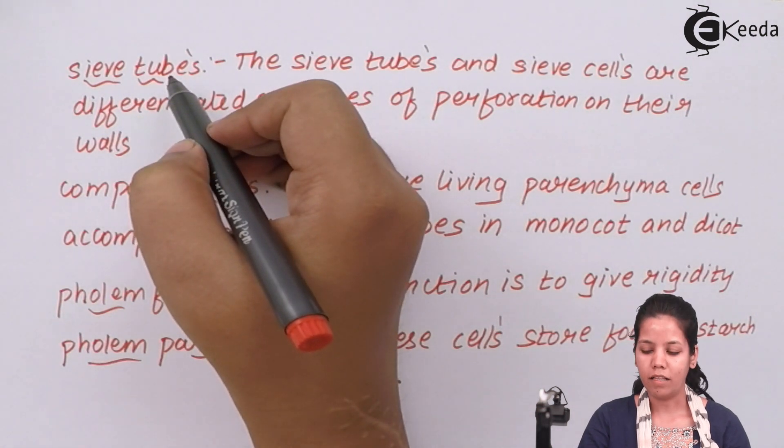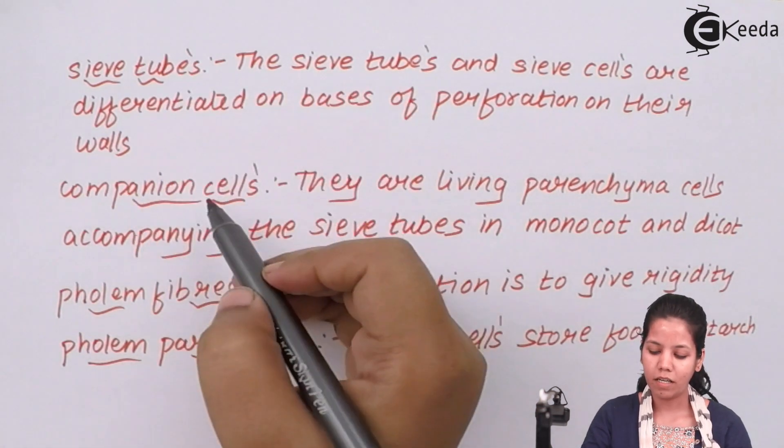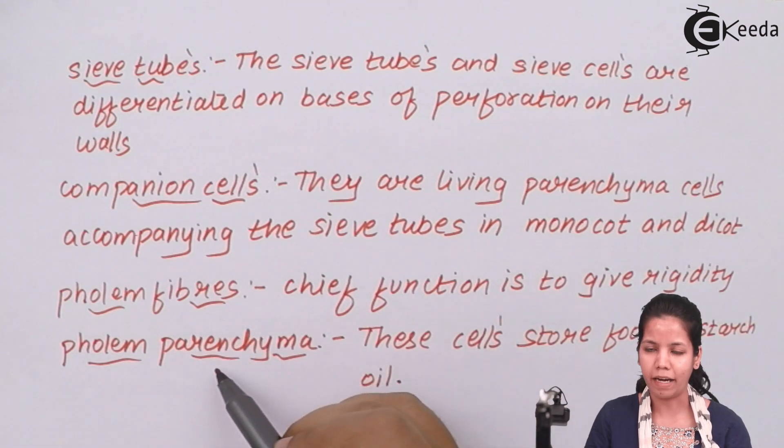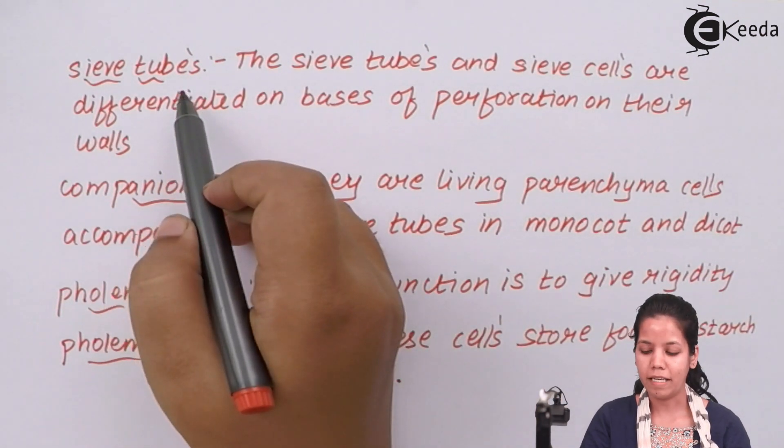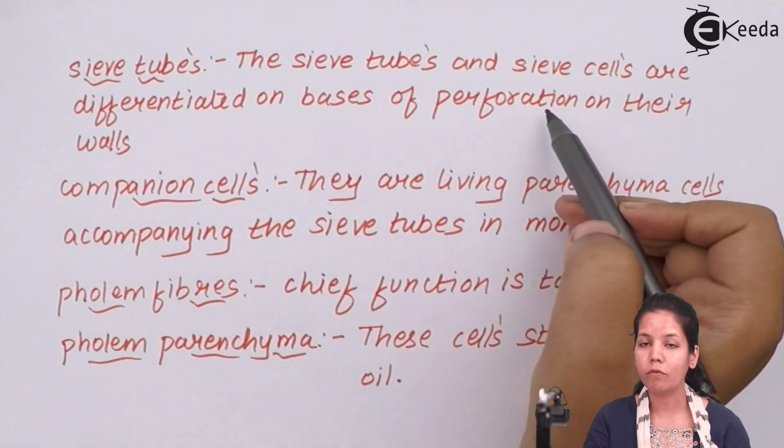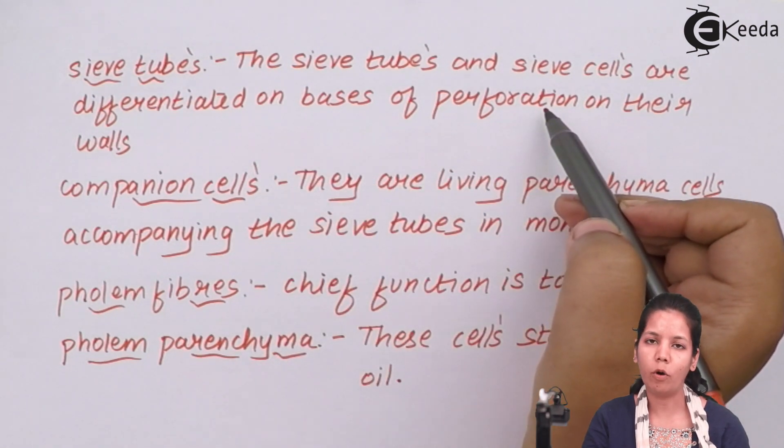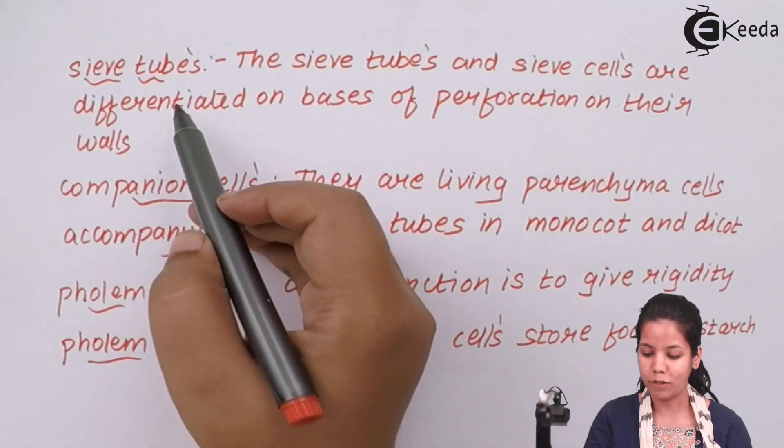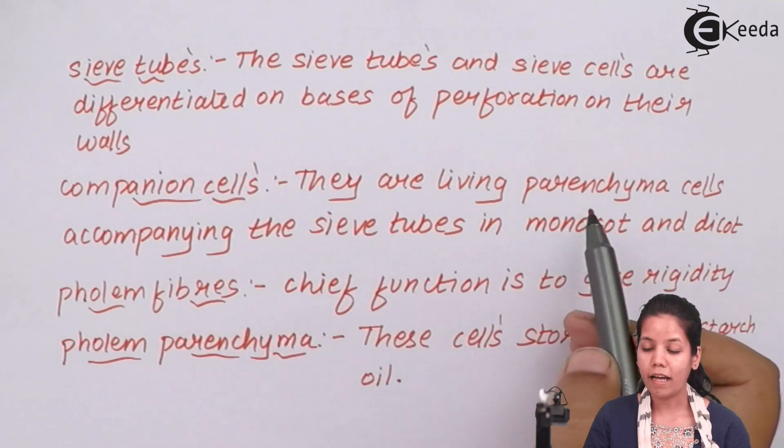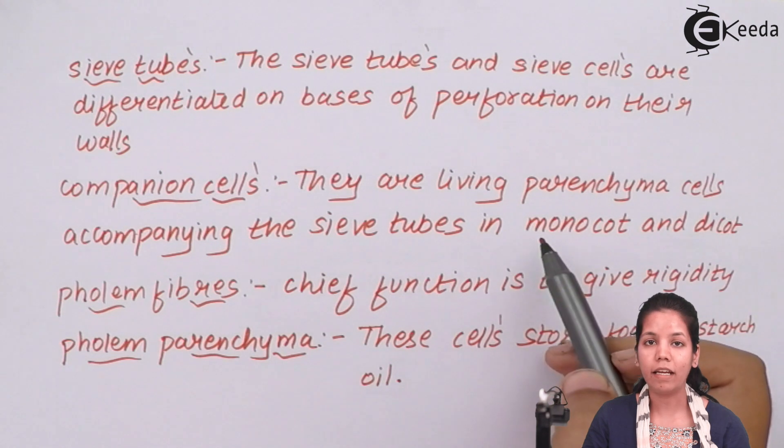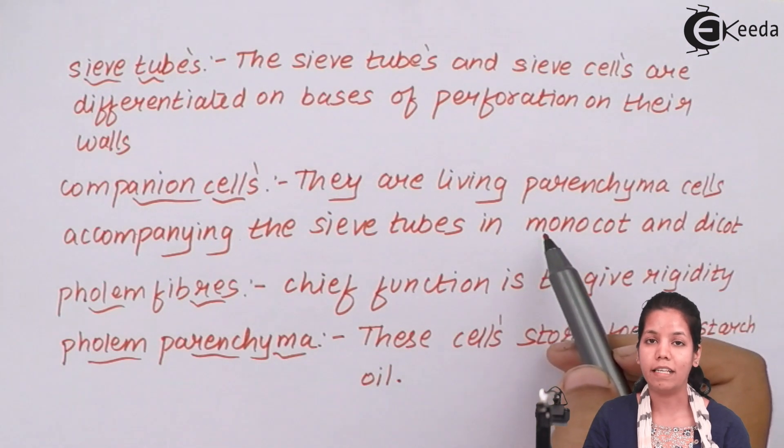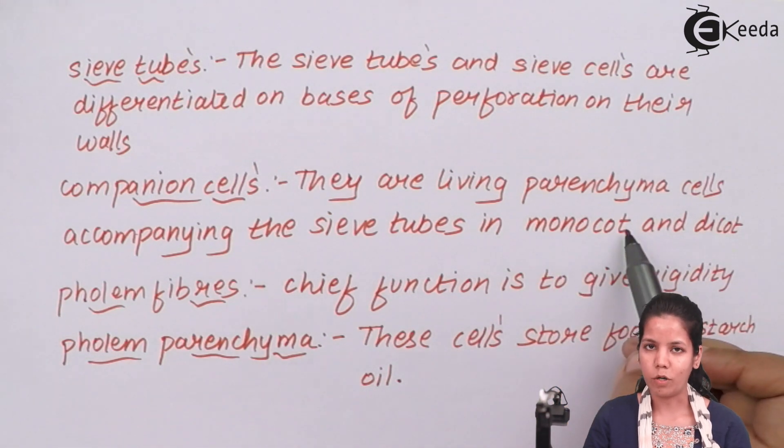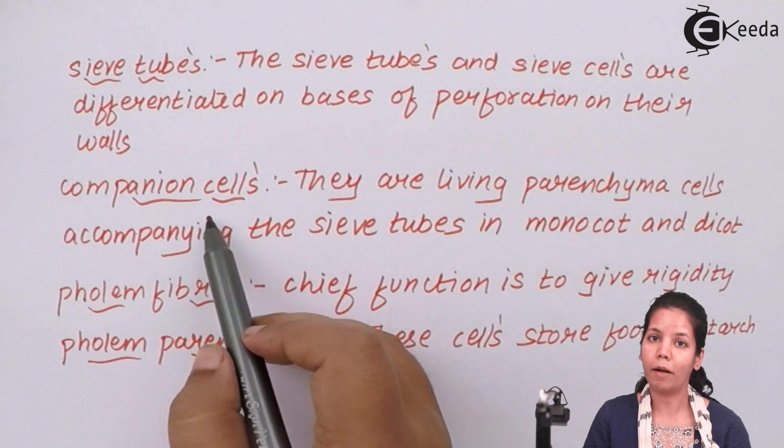Phloem cells—the other parts include sieve tubes, companion cells, phloem fibers, and phloem parenchyma. Sieve tubes are basically differentiated or categorized on the basis of perforations or small openings present on them through which food material can pass in or pass out. Companion cells are nothing but they accompany the sieve tubes in carrying, and they are living parenchyma. They include all the qualities of parenchyma—that is intercellular spaces, unspecialized cells, all those. Now majority monocots and dicots all of them have companion cells.